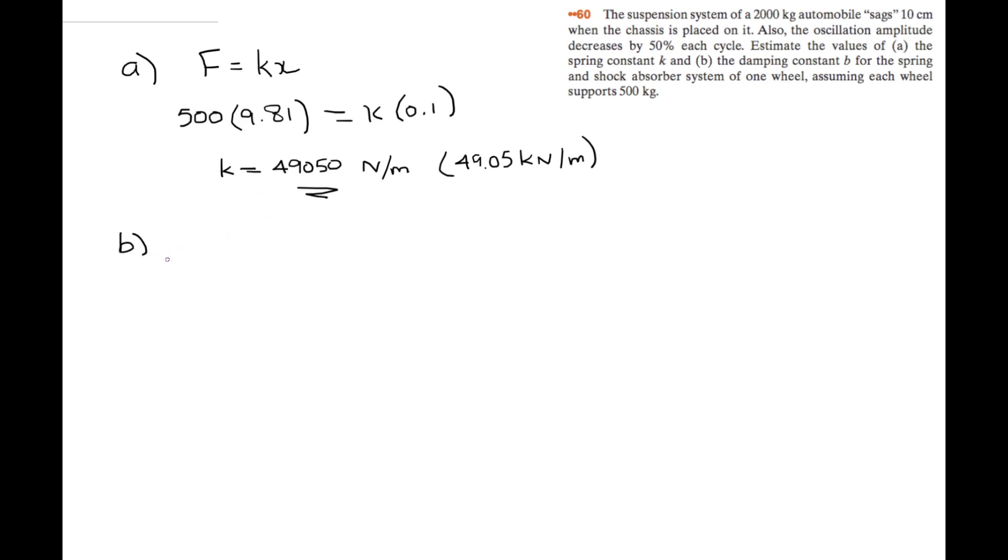So then for B, we're first going to find the angular frequency. Omega is equal to 49,050 over the mass, which is 500. And this is equal to 9.945 radians per second.